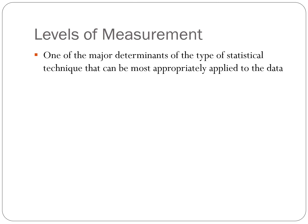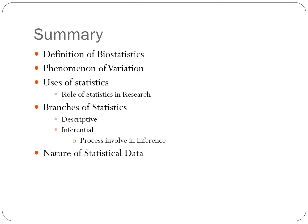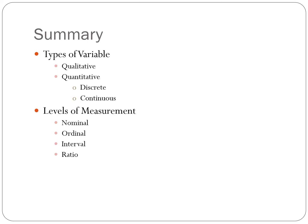Level of measurement is one of the major determinants of the type of statistical technique that can be most appropriately applied to the data. The ranking of our data goes: nominal, then ordinal, interval, and ratio. In summary, we have discussed the definition of biostatistics, the phenomenon of variation, how it's used in the medical field, its different branches, and the nature of statistical data — including the types of variables, whether qualitative or quantitative, and levels of measurement.